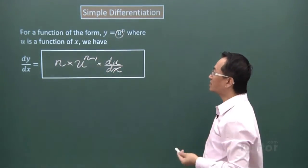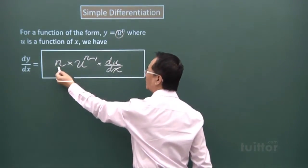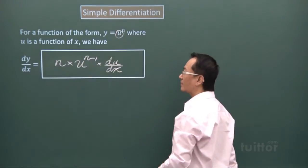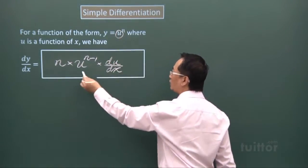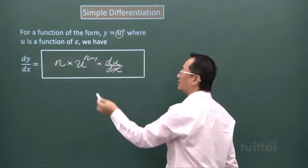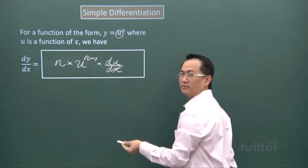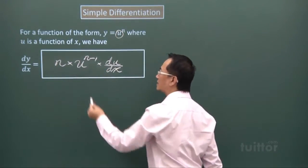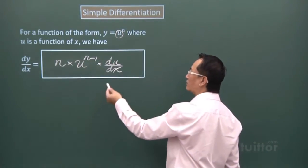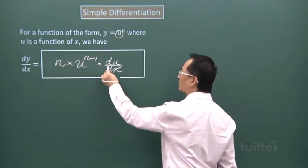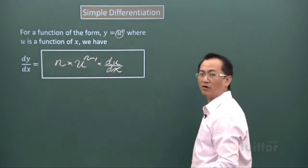Once more, you have the index n; it will become the multiplier. Multiply to whatever you have there, u to the power of n, but reduce the index by one. Then multiply to du/dx because u is a function of x. Hence the symbol here, du over dx.